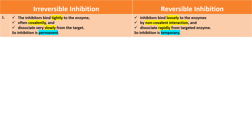Whereas, in case of reversible inhibition process, inhibitors bind loosely to the enzymes by non-covalent interaction and dissociate rapidly from the targeted enzyme. Therefore, this type of inhibition is temporary.